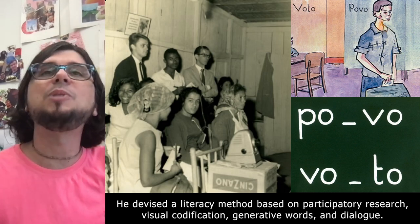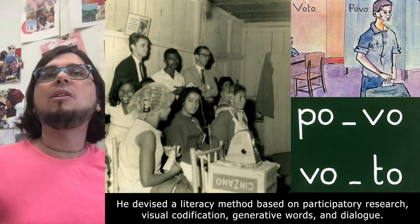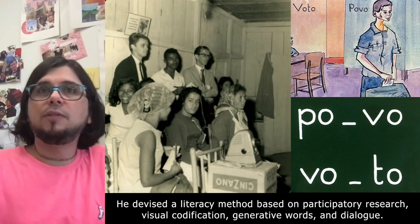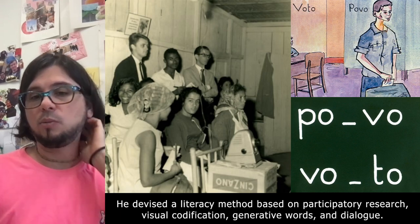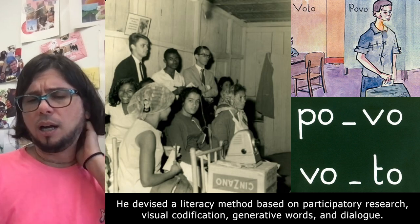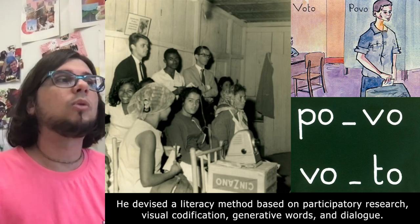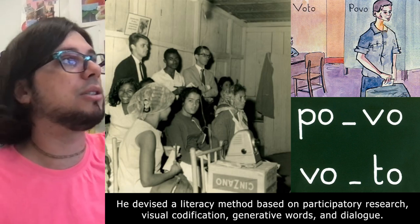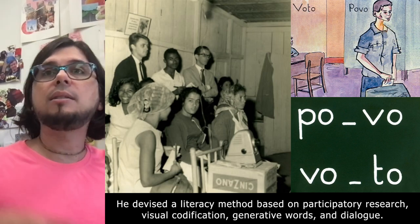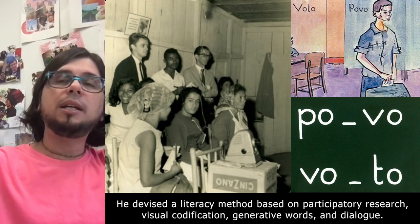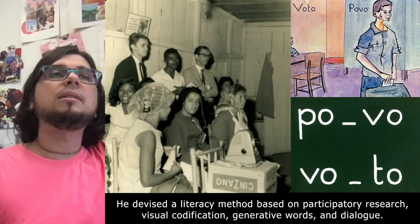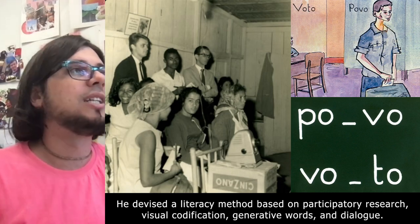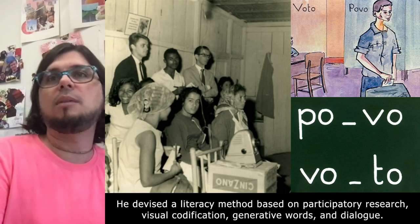For example, if we read the word 'voto,' which means vote, it would generate debate — some people would say it's useless, others would say there is hope around voting. The last element is dialogue. Participatory research is also important: you do ethnographic research, go into the world of these people, and get the words they are using. For example, 'voto' is common in Brazil, but they also made pictures for 'belota,' a very specific local word only used in that region.